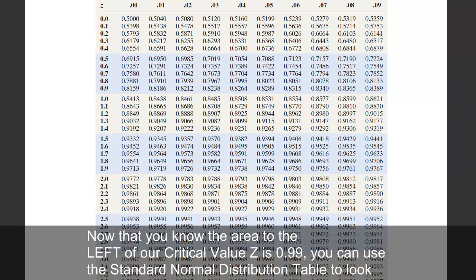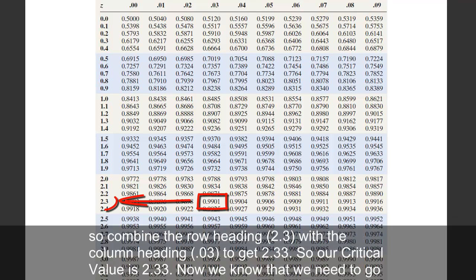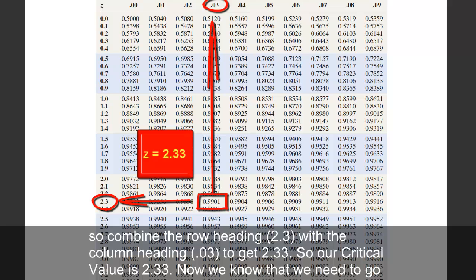Now that you know the area to the left of our critical value z is 0.99, you can use a standard normal distribution table to look up this z-score. In this table, you hunt for the closest match to our 99th percentile critical value. The closest match to 0.9900 is 0.9901. So combine the row heading 2.3 with the column heading 0.03 to get 2.33.